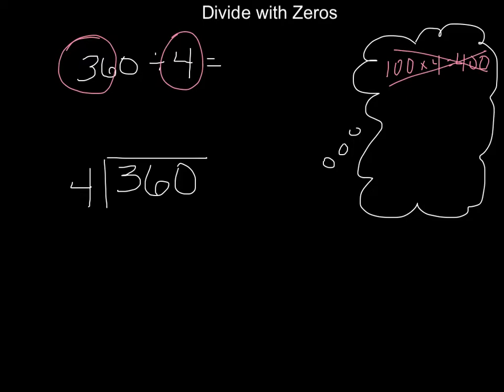Again, that makes me remember: I know that 9 groups of 4 is 36, but how would I get from 36 to 360? Well, 36 times 10 is 360, isn't it? It's just 10 times more. So that means I'm not working with 9 times 4 — I'm working with 90, which is 9 times 10, times 4 to get to my 360.